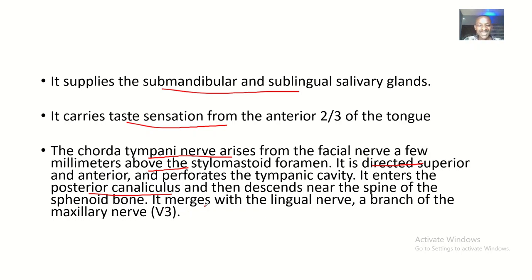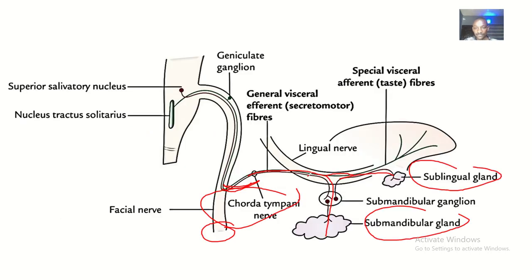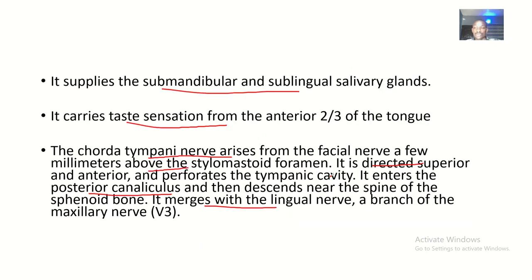The Chorda Tympani then merges with the lingual nerve, which is a branch of the mandibular nerve. Looking at the picture, this is the Chorda Tympani and this is the lingual nerve — you can see how they are merging together. This is an important part of the description of the nerve, and if asked to discuss the Chorda Tympani, you need to mention all of this.